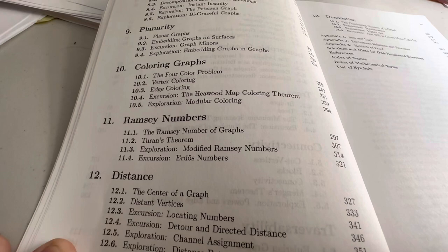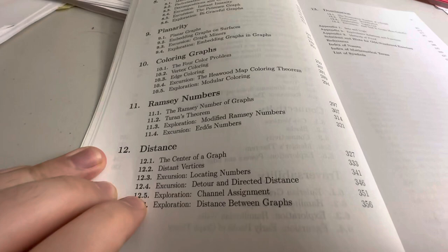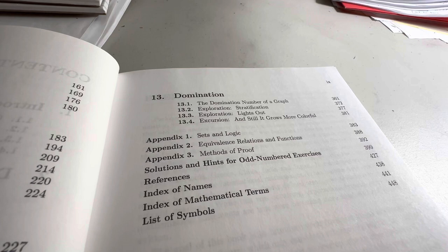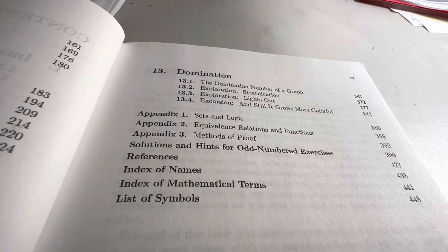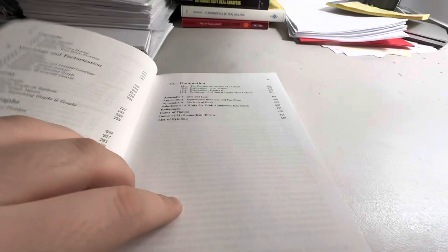Erdos numbers. I hear that name Erdos a lot. Domination. Exploration lights out. Excursion. And still it grows more colorful. Solutions and hints to odd-numbered exercises? Are you kidding me? You mean to tell me that this book has answers in it? Amazing. I can already tell you that I love this book and I haven't even read it.